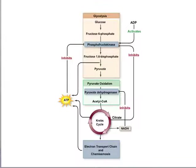When NADH is being consumed rapidly — faster than it is being produced — we have an accumulation of ADP, or adenosine diphosphate. When ADP accumulates, it signals the activation of glycolysis so that ATP is produced, increasing the production of ATP.